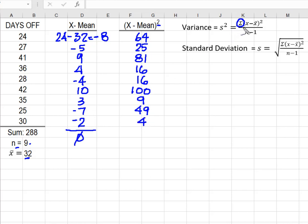So I'm going back to my formula. I'm saying the sum of (X minus x̄) squared. So now I'm going to sum this column, and I'm going to get 364.